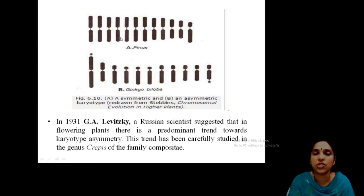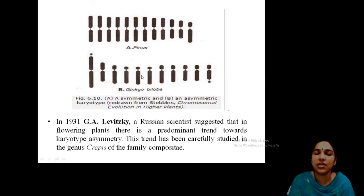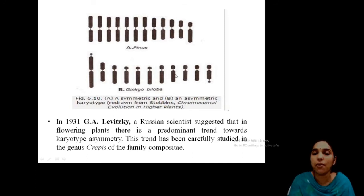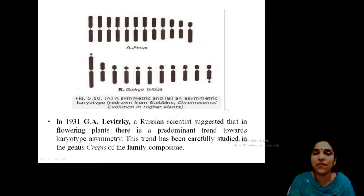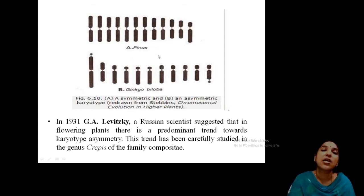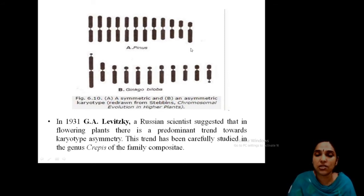Here is an image showing chromosomes arranged in Pinus as well as in Ginkgo biloba. The first one, Pinus, is symmetric — you can see there is not much difference between the larger and smaller chromosomes. In Ginkgo biloba, you can see great differences between larger and smaller chromosomes, so it is asymmetric. In evolution, from conifers to Ginkgo, asymmetry can be used as a parameter. Asymmetry is an advanced feature; symmetry is the primitive feature.